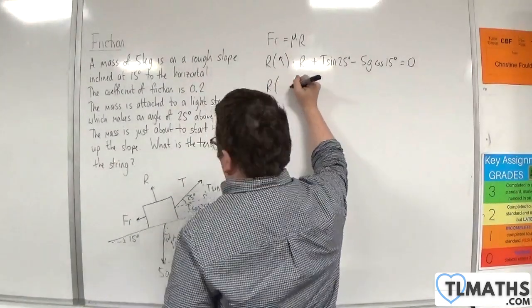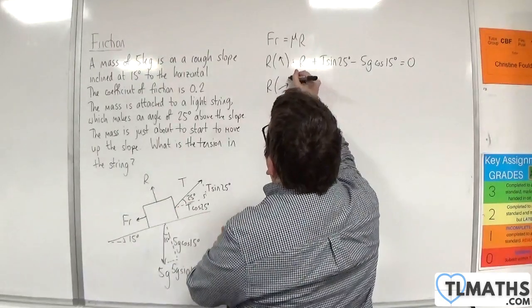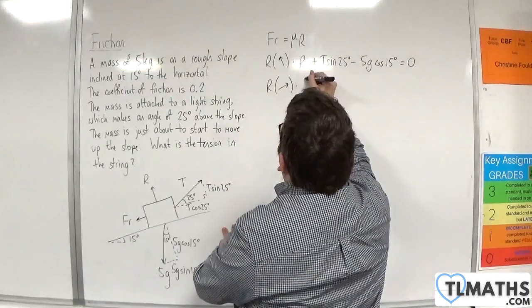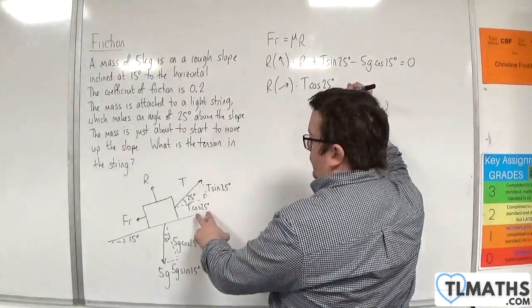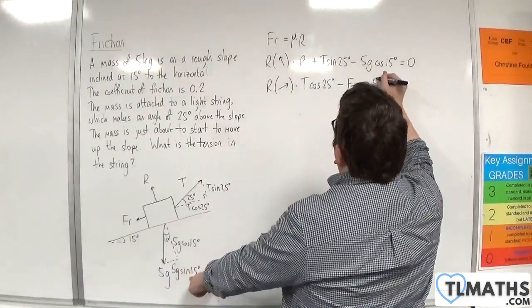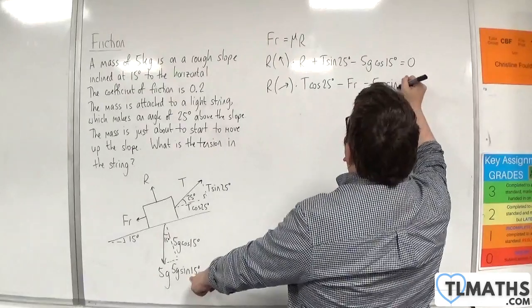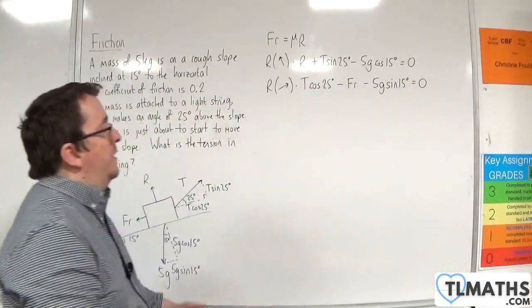I can resolve parallel to the slope as well, and I'm going to take up the slope as positive. So we have T cosine 25 degrees, take away the friction, take away 5G sine 15 degrees. It's going to be equal to 0 because we're not accelerating.